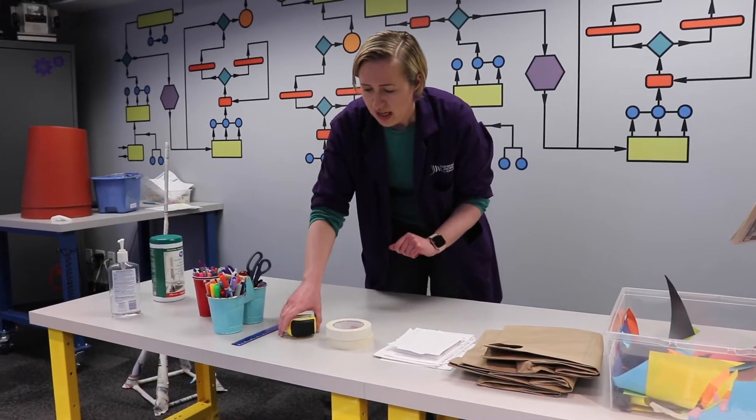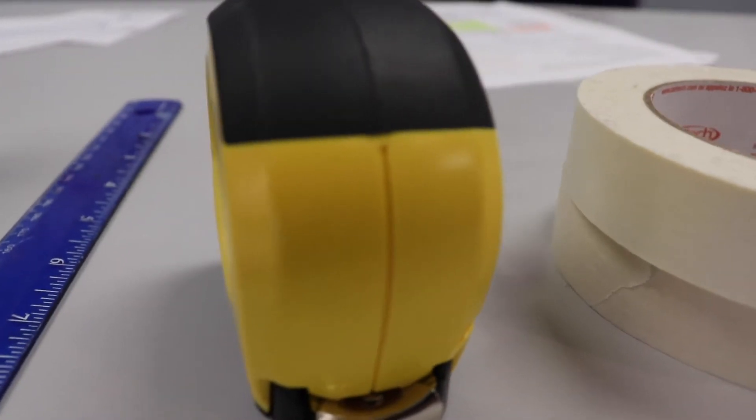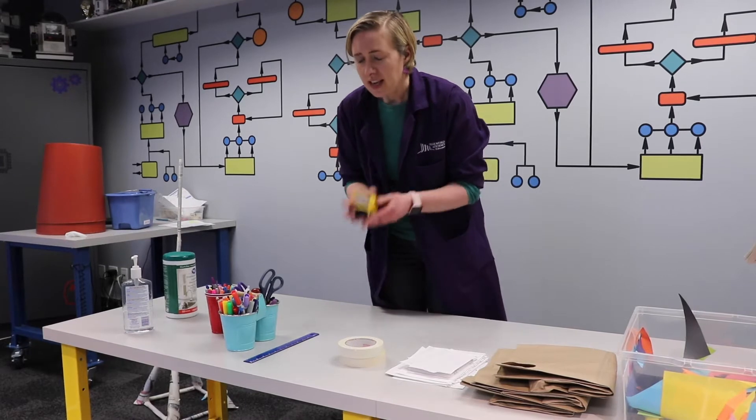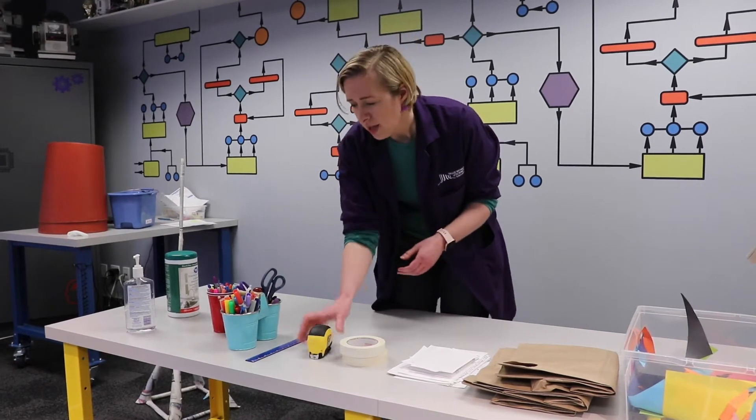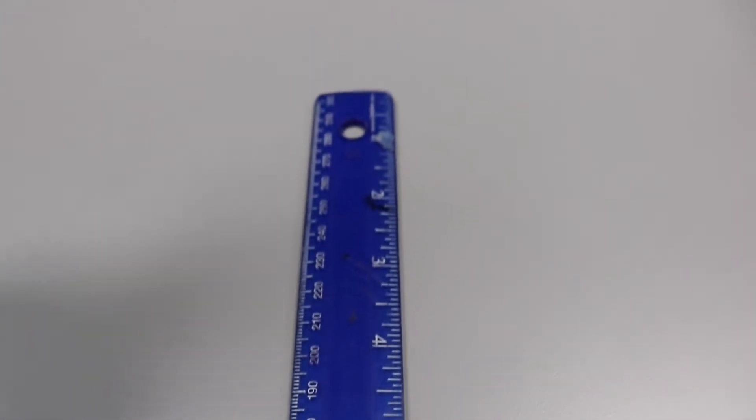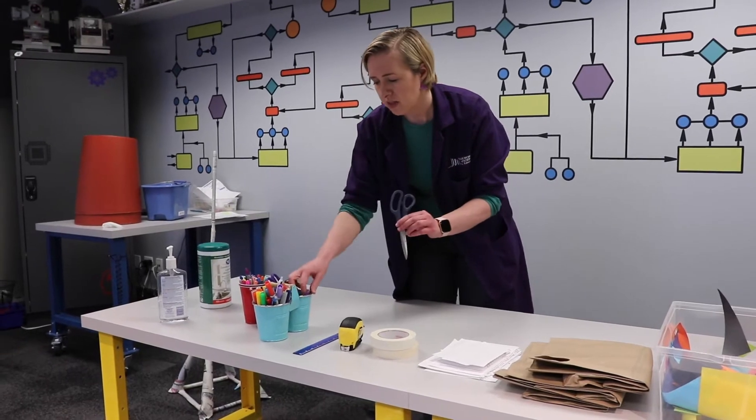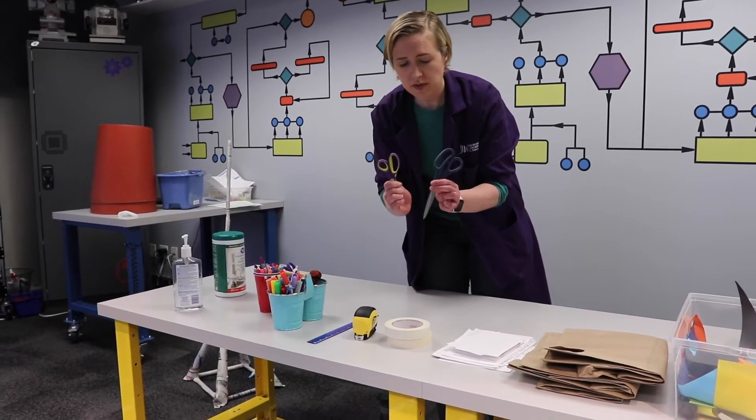You're also going to need a measuring tape for this activity so that we can measure how tall our skyscrapers are at the end. If you don't have a measuring tape, you can also use a ruler. You just might have to stack it on top of each other a couple times. And then you're also going to need a pair of scissors that's comfortable for you to use.